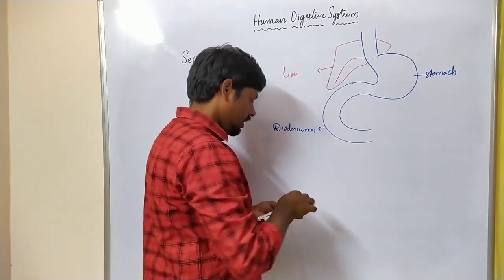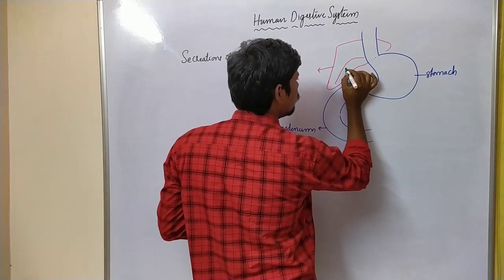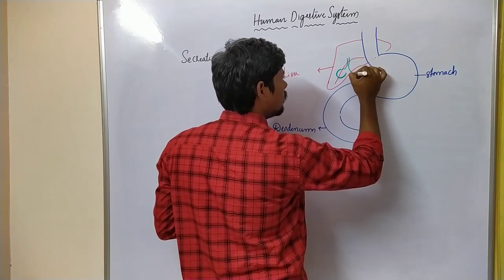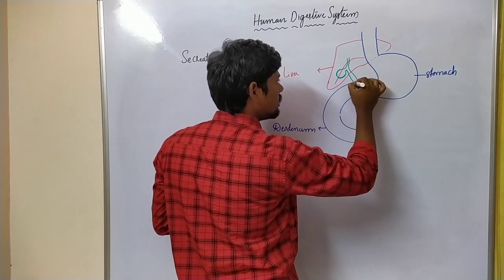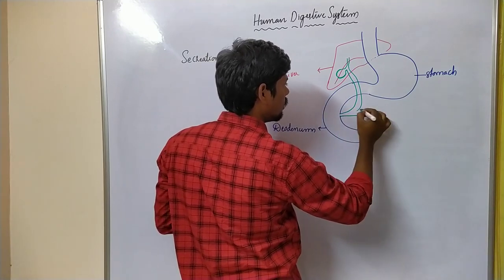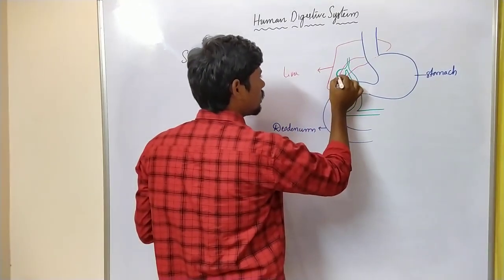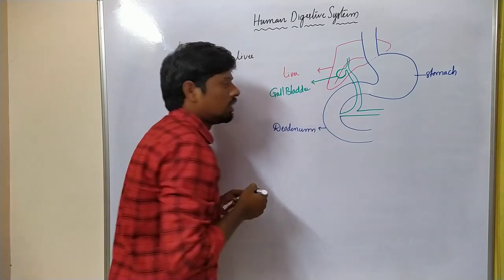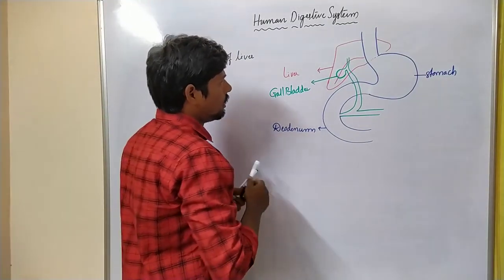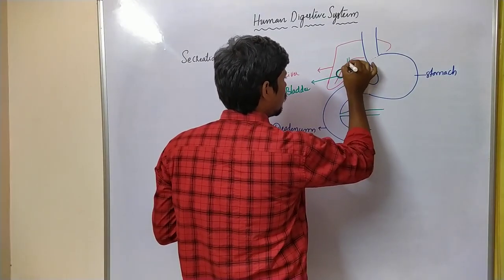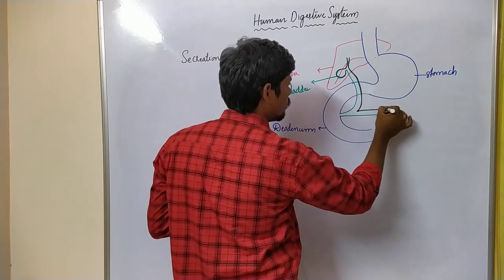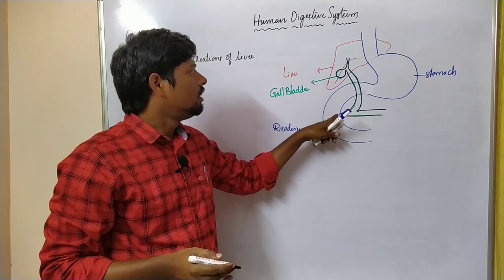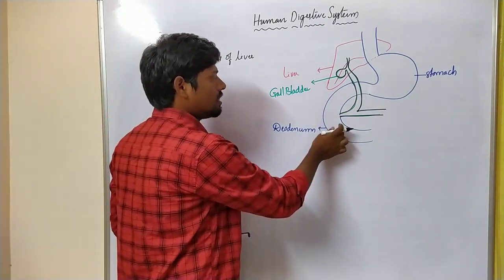Here is the liver. The liver contains a specialized structure called the gallbladder. This is a tube-like structure — the gallbladder. This gallbladder connects with the duodenum, which is part of the small intestine.